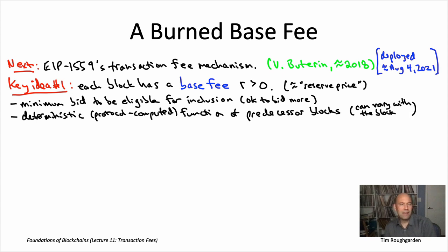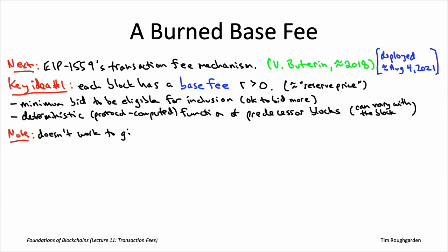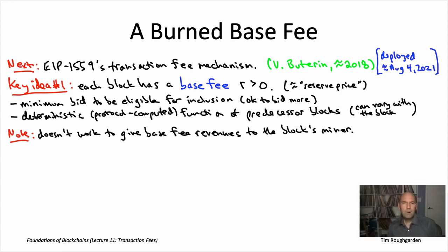Where do the base fee revenues go? Your instinct might be that they go to the miner, as in first-price auctions. But that totally doesn't work — if you pass base fee revenues to the miner, it's as if the base fee were zero. The reason is that miners and transaction creators can collude to avoid the base fee. A miner, along with users, can actually collude to evade that base fee that the protocol is trying to implement.